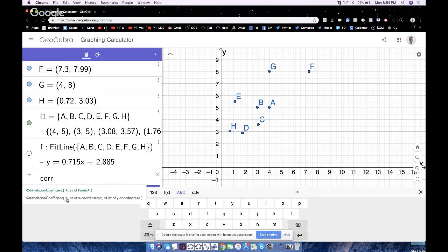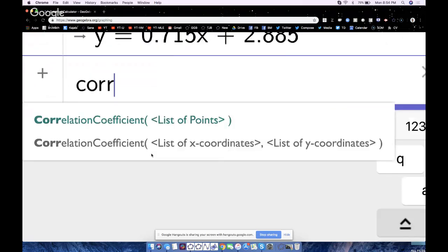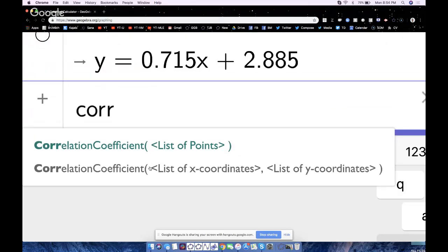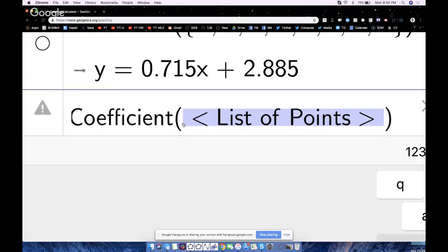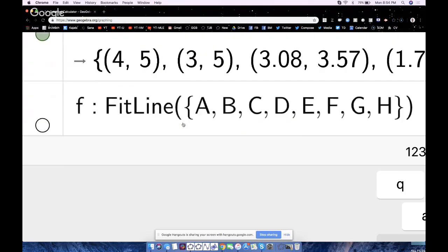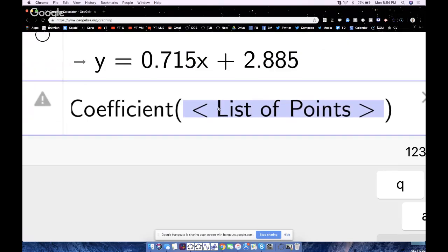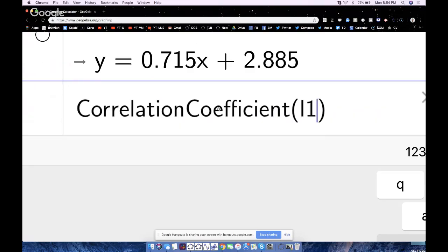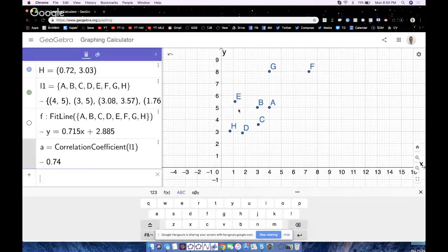We saw the correlation coefficient. We'll just touch it there. Now, we want to put in the list of points. Well, that list of points, GeoGebra called L1. All these points lie in a list. A list is indicated with that brace right there. So let's type in correlation coefficient L1, enter. Now, that correlation coefficient is 74 hundredths.